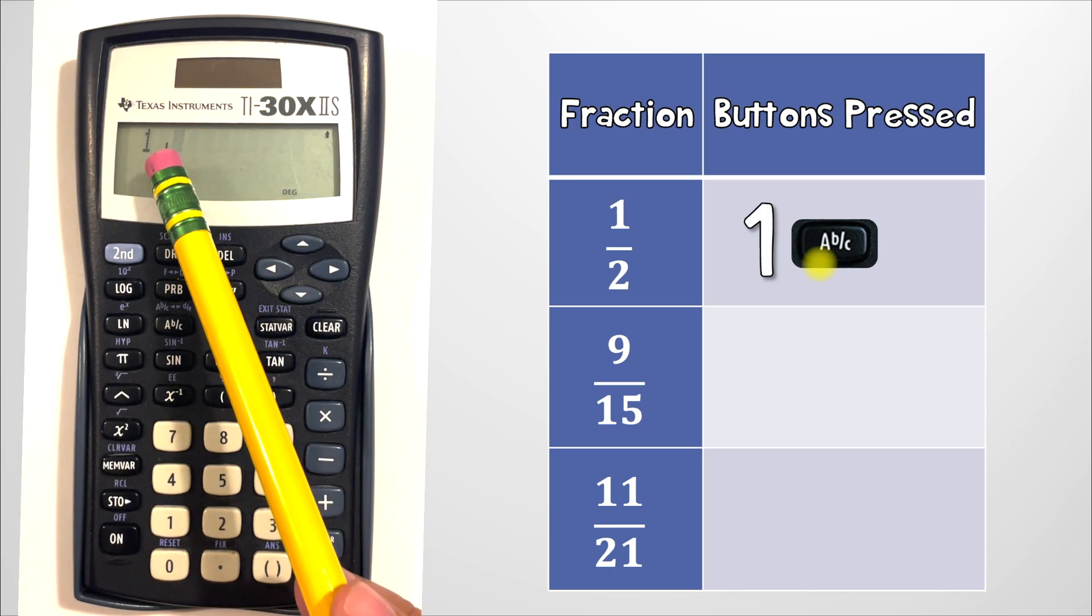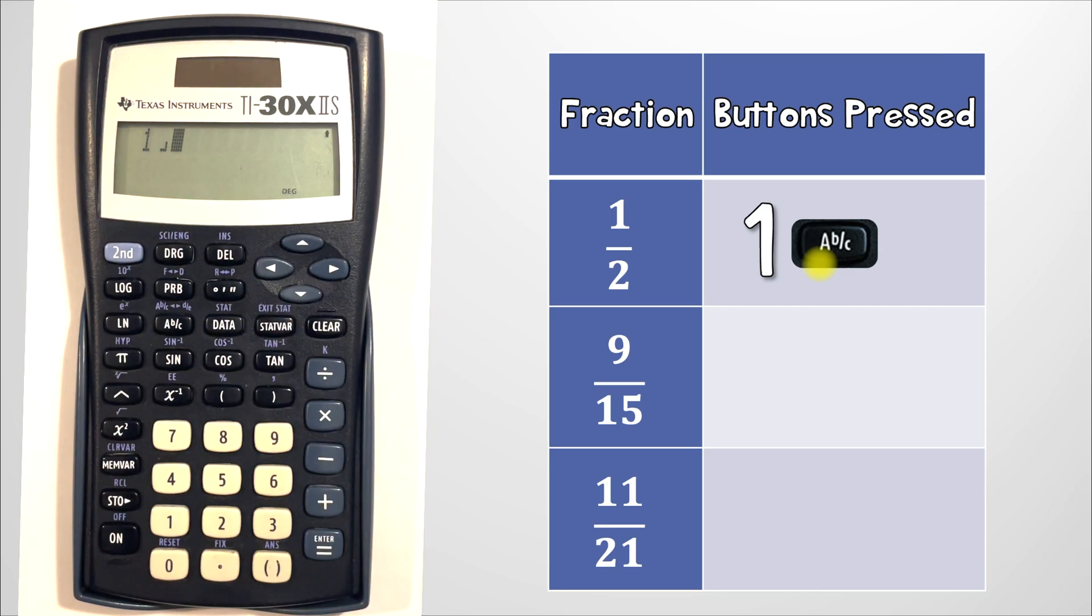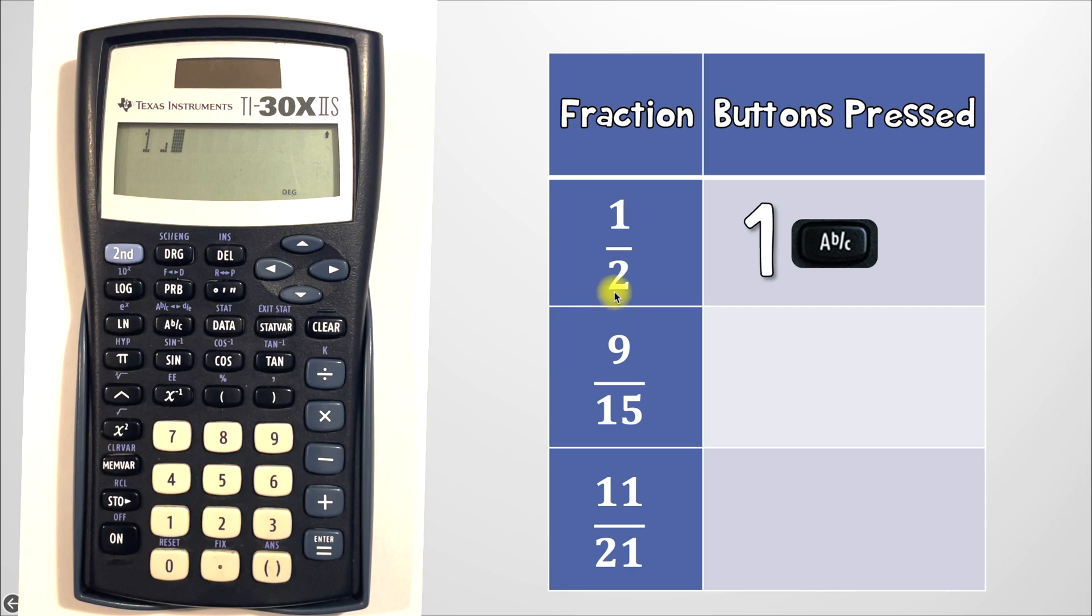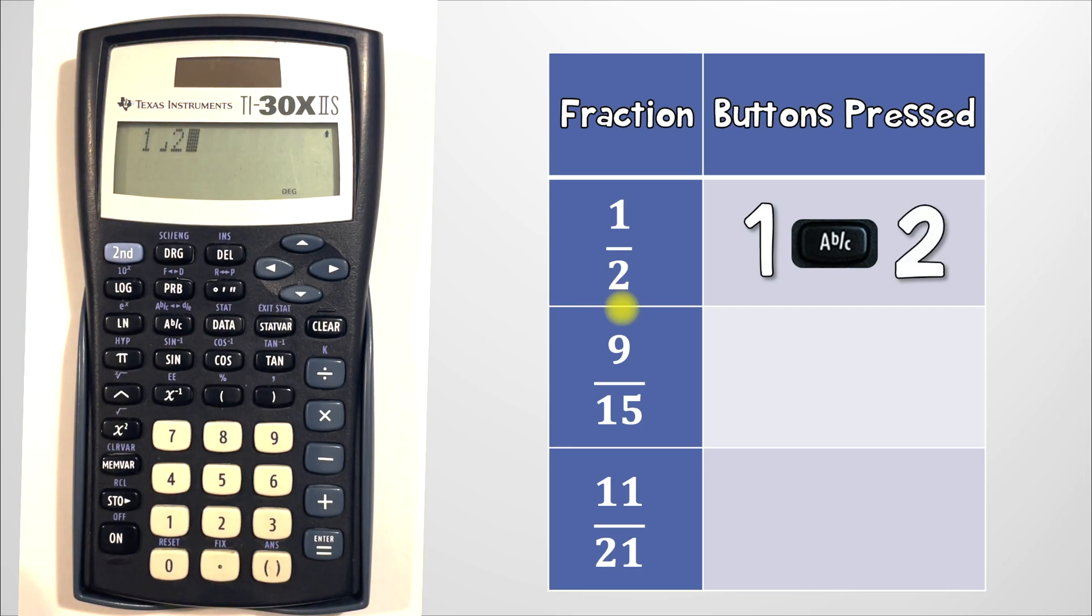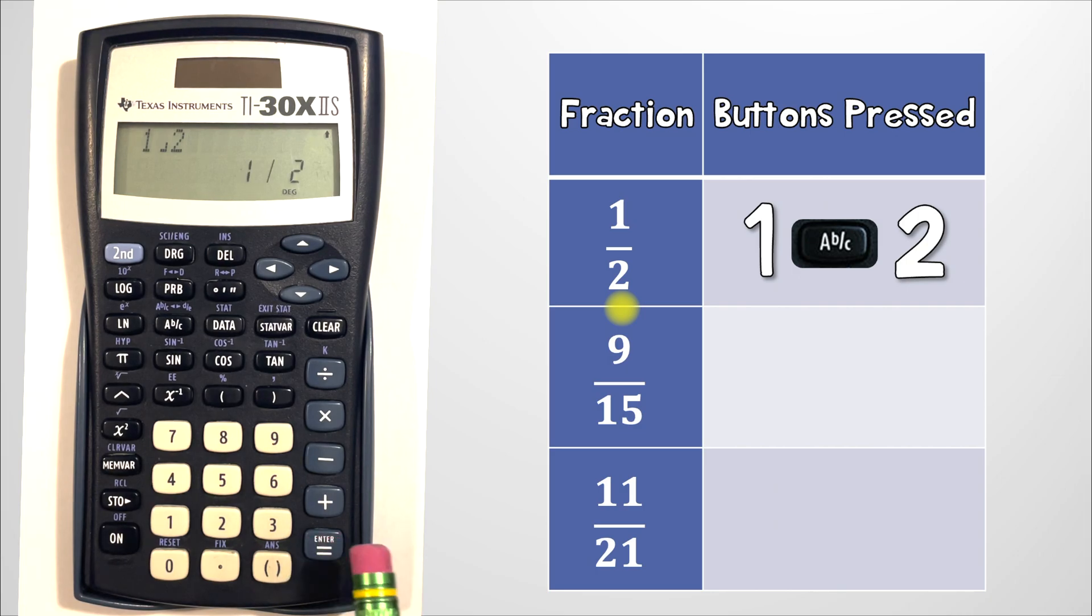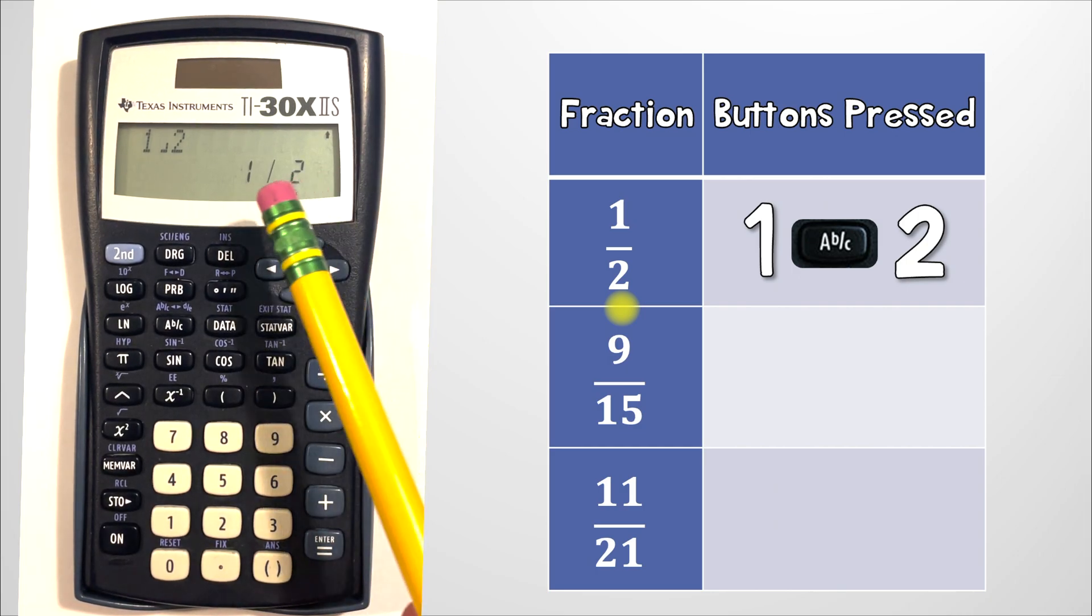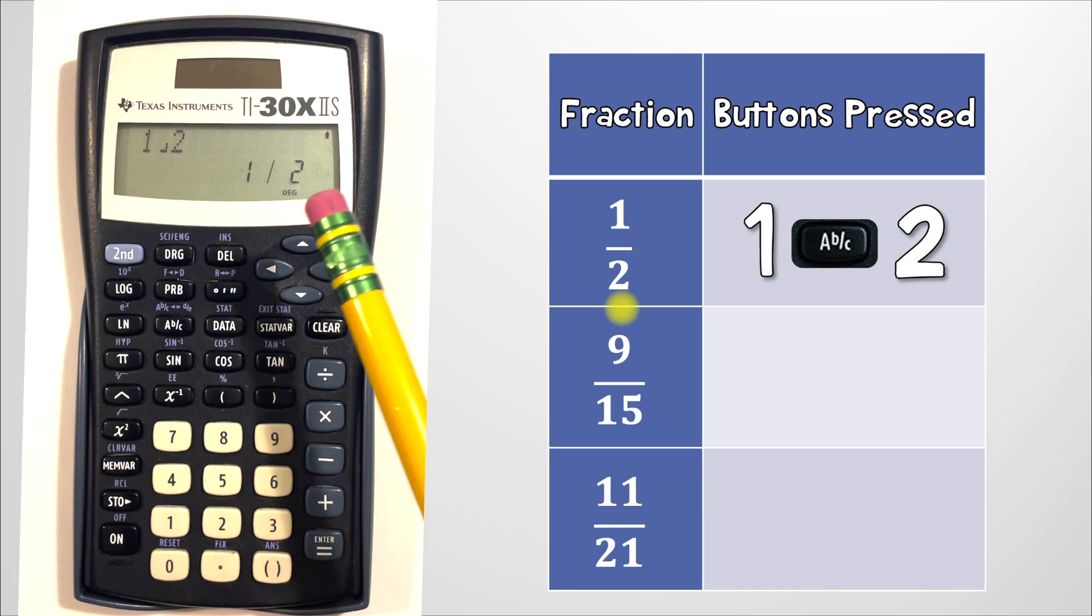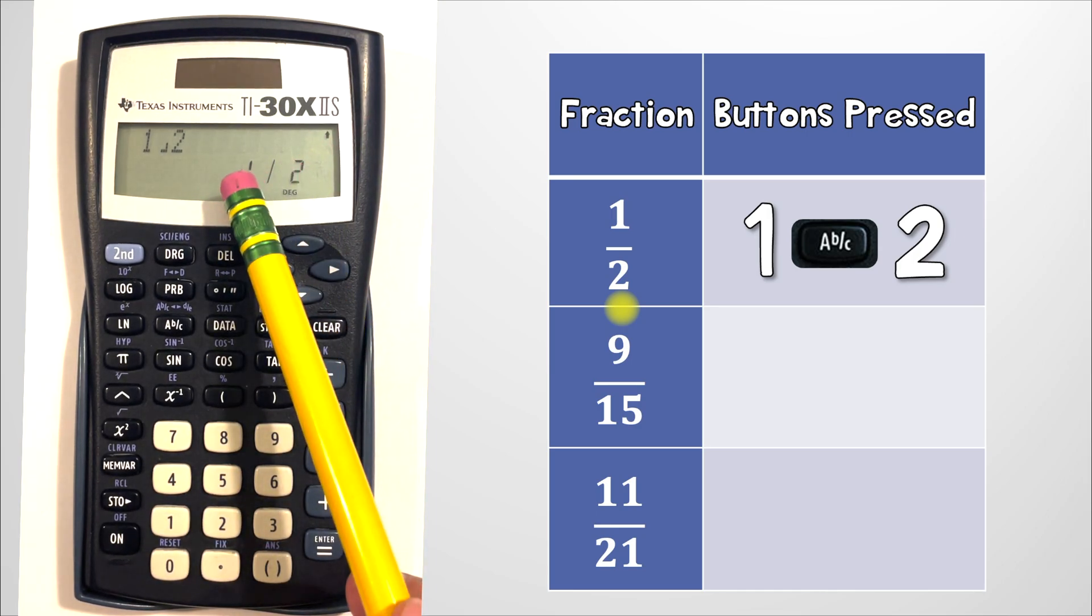Now you'll notice you get this little lowercase l, don't freak out that's exactly what's supposed to be there. So then next we're going to press the number 2. Once we're done with that we hit enter and it's going to show us 1 over 2 in the calculator. So we've officially made our first fraction.